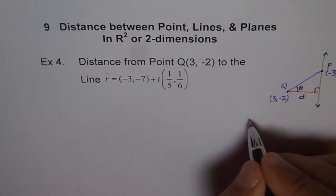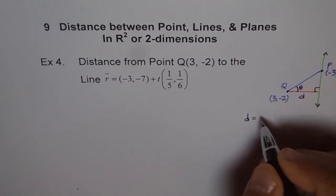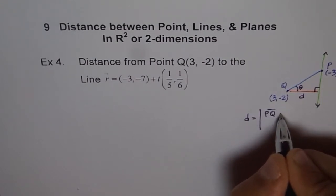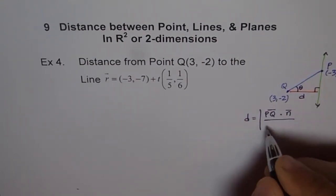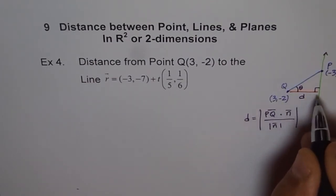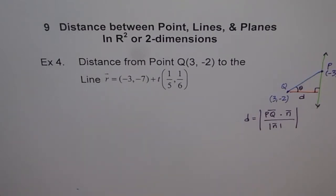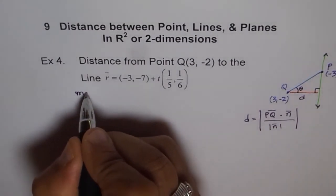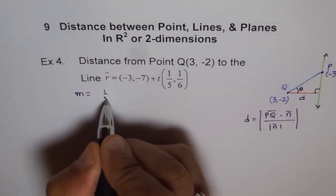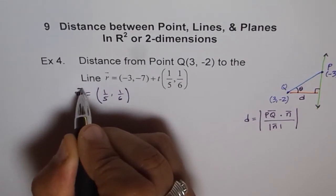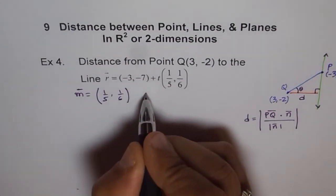The distance which we are looking for is PQ · n divided by the magnitude of n. That gives us the distance D. From the equation, we already know what the direction is: M = (1/5, 1/6). What should be the normal?